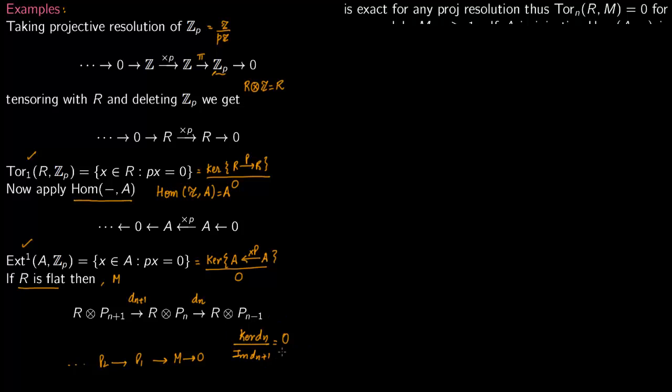Now since this is 0 always, that means that Tor is 0, because this is precisely what is the definition of Tor. Because kernel is equal to the image for exactness, since R is flat this becomes exact.